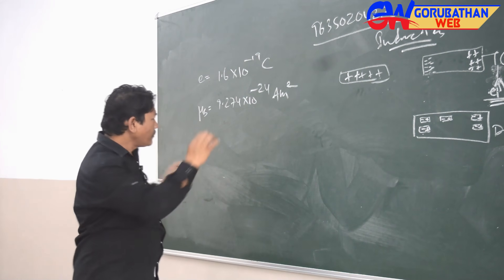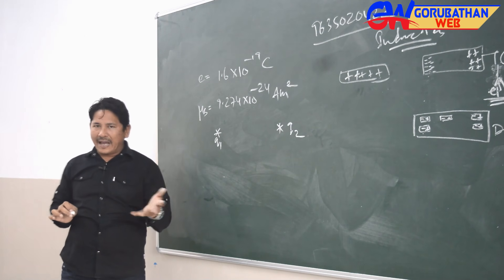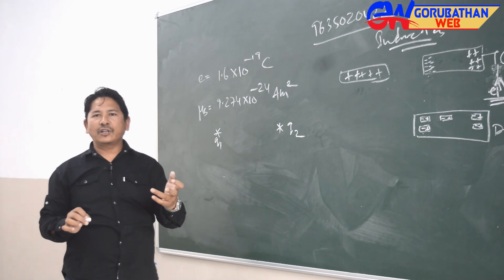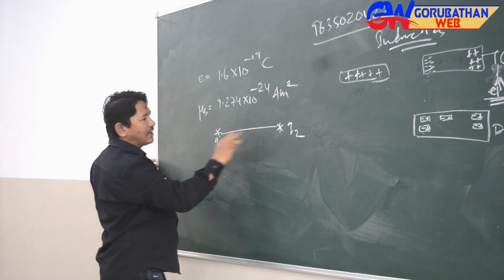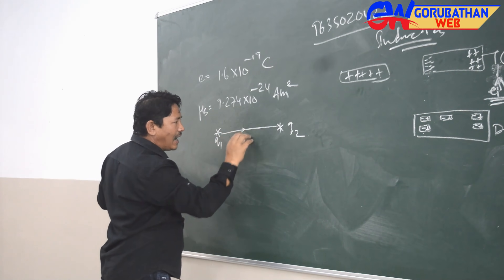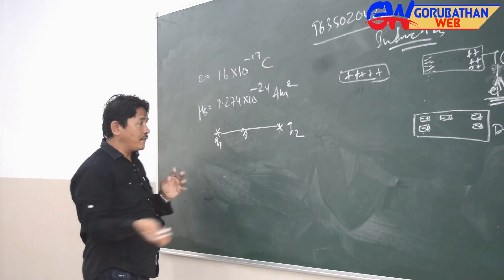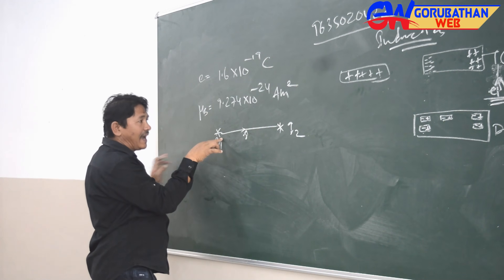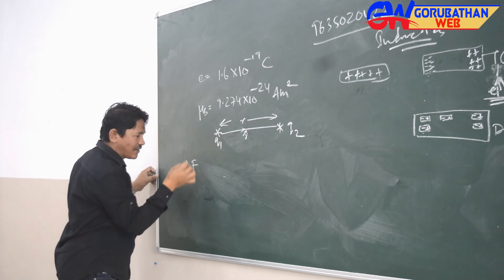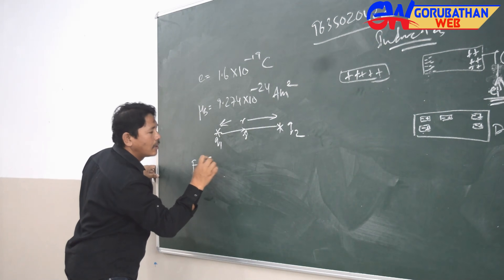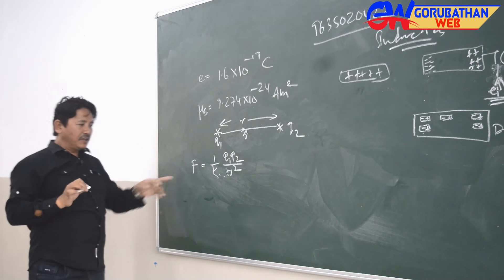Coulomb's Law states that any two charges — say q₁ and q₂ — attract or repel each other with a force directly proportional to the product of the charges and inversely proportional to the square of the distance between them. The force F = (1/K) · q₁q₂ / r², where 1/K is a proportionality constant that depends on the units chosen and the type of material.